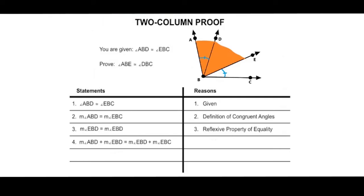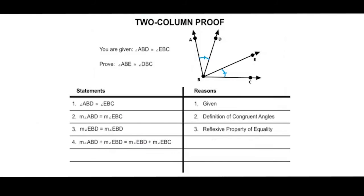Next, statement four is that the measure of angle ABD plus the measure of angle EBD is equal to the measure of angle EBD plus the measure of angle EBC. Because I'm adding angle EBD to both sides of this equation, reason four is the addition property of equality.